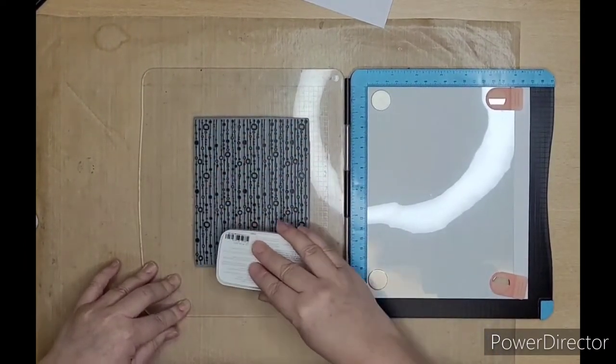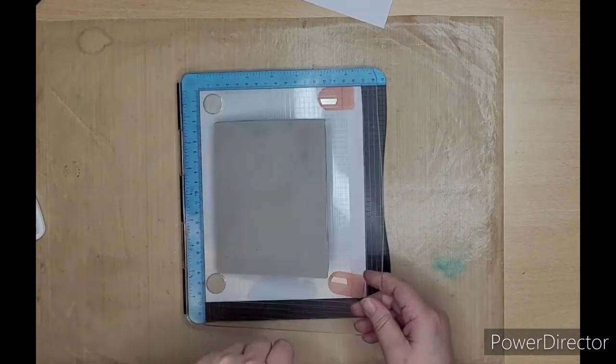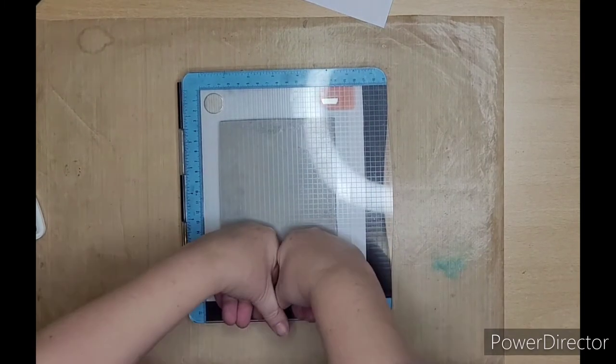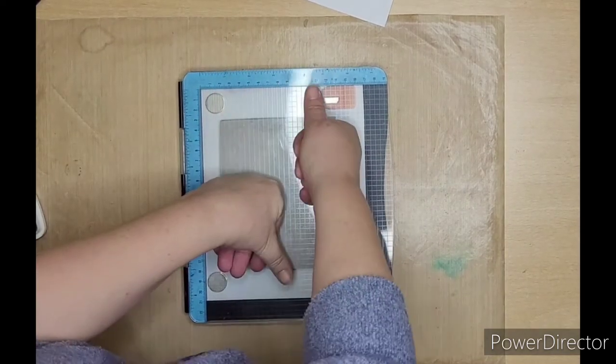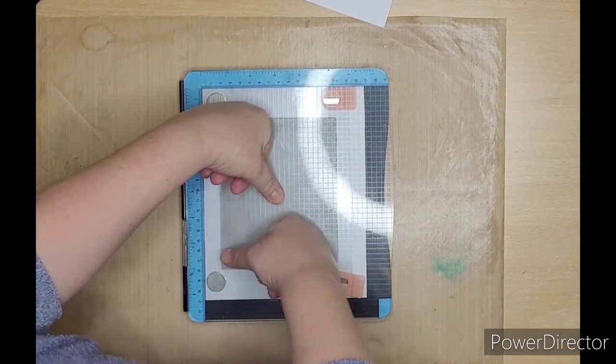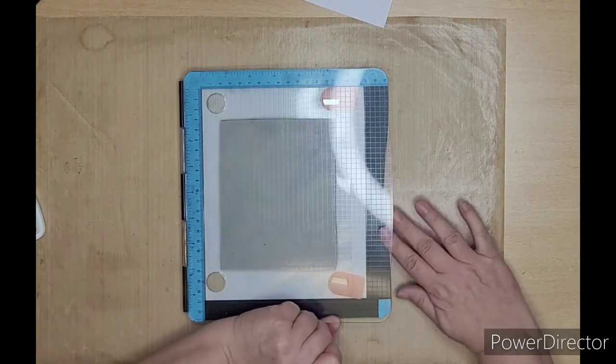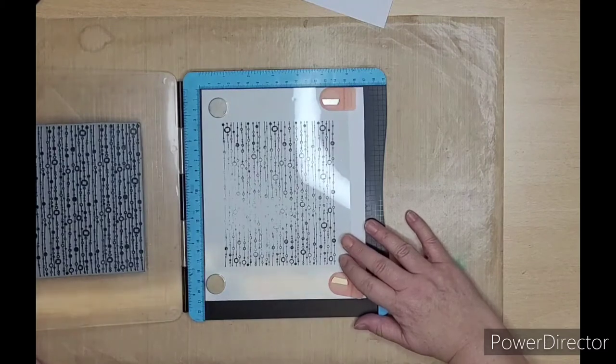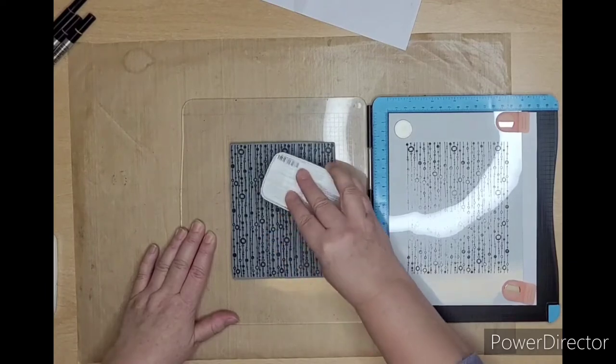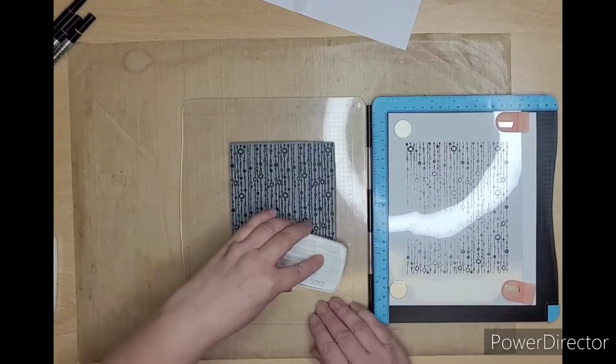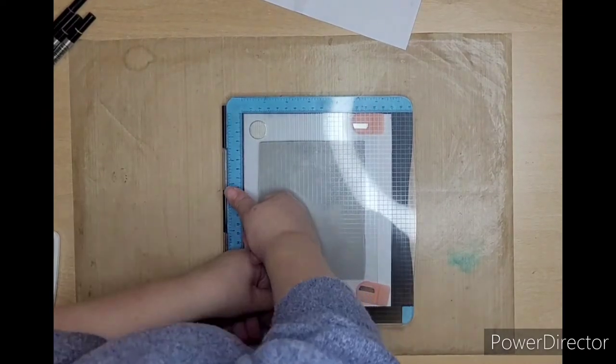This is a big background stamp, so it will probably need several stampings to get the full image. As you can see, not quite enough ink on the first go, so we'll do a second stamping to get the complete image. We're using the StazOn pigment black ink pad.